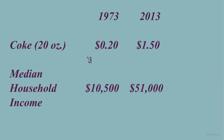Here are my estimates for the price of 20 ounces of Coke in 1973 and in 2013. This is an estimate for 1973 because they didn't actually sell 20 ounces — they sold them in 10 ounces and it was about 10 cents for 10 ounces. And in 2013, the prices varied a bit, somewhere between $1.25 and $1.75, so I chose something easy: $1.50.